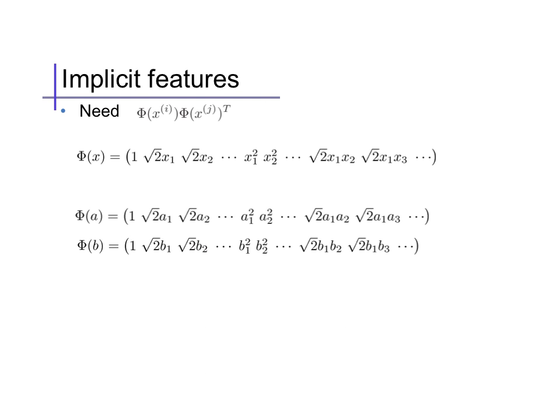So, for the dual form, we need to compute the inner product of two expanded feature vectors, phi of xi and phi of xj. Let's denote xi and xj as just a and b for convenience. And, listing out our features for both points, we can compute them here.